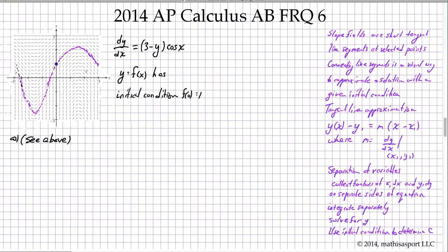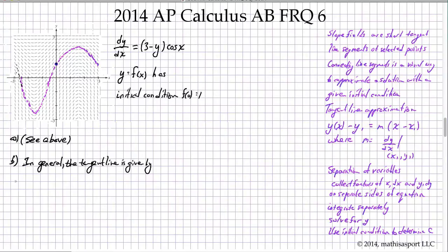Part B asks us to approximate f(0.2) using a tangent line approximation. The tangent line is just point-slope form: y minus y₁ equals m times (x minus x₁), where m is the slope — the value of the derivative at the point in question. In general, the tangent line is y minus y₁ equals dy/dx evaluated at (x₁, y₁) times (x minus x₁).